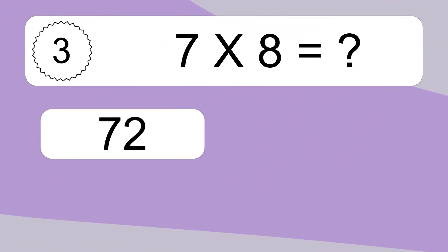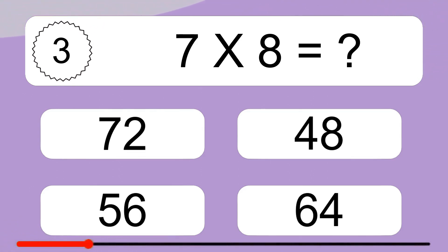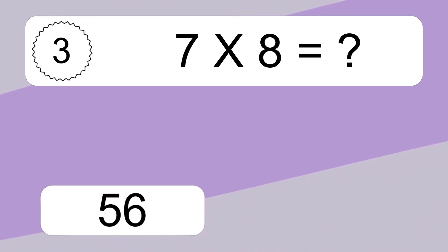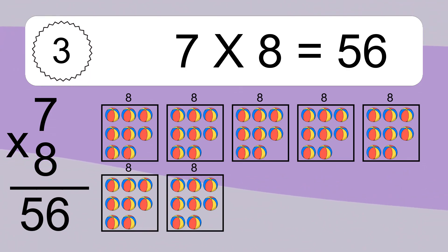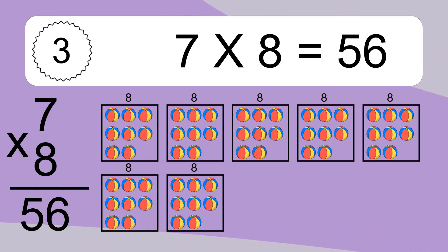7 times 8 equals what? 7 times 8 equals 56. We have 7 boxes, and each box has 8 colorful balls inside. If you count all the balls in all the boxes together, you will have 7 times 8 balls. This equals 56 balls.